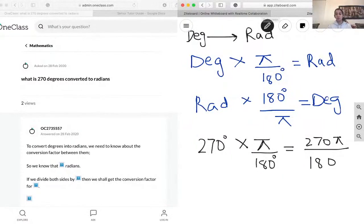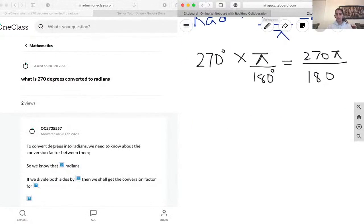Now we can further simplify that by dividing. So the easiest to divide by is by 10. We're just going to get rid of the zeros and we're left with 27 over 18 pi.